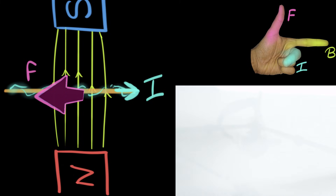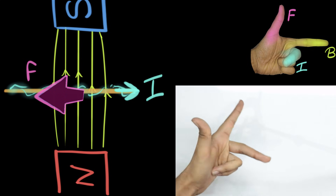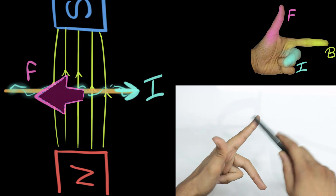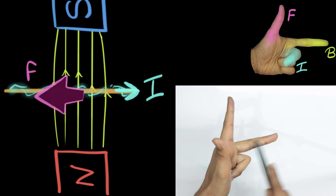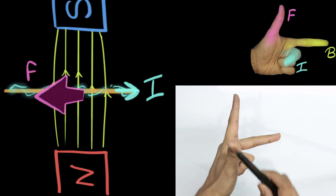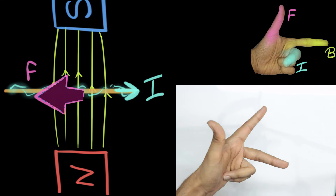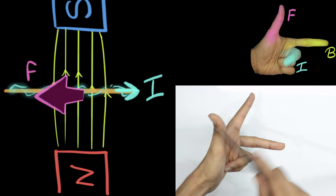So what did we learn in this video? To calculate the direction of the force on a current carrying wire kept in a magnetic field, we can either use Newton's third law — which is a bit tedious — or we can use Fleming's left hand rule, in which the forefinger gives the direction of the magnetic field B, the middle finger gives the direction of the current I, and the thumb gives the direction of the force F acting on the wire. The easy way to remember it: FBI.